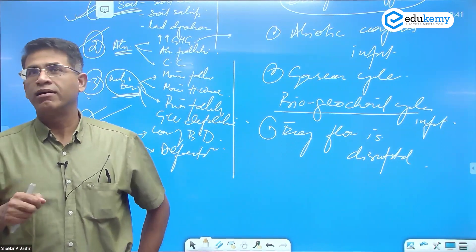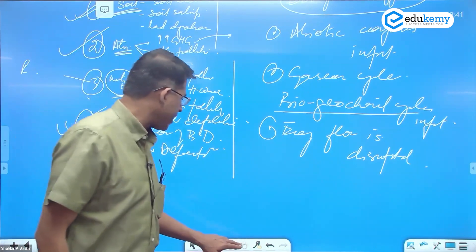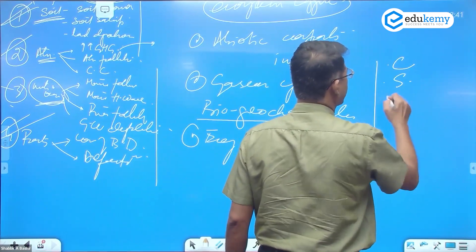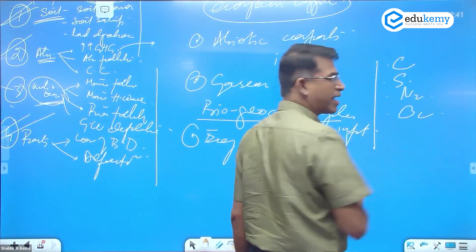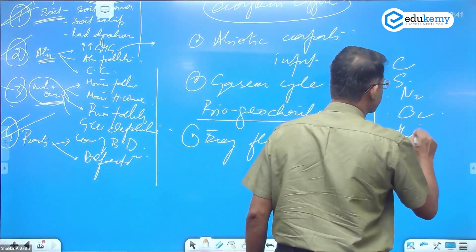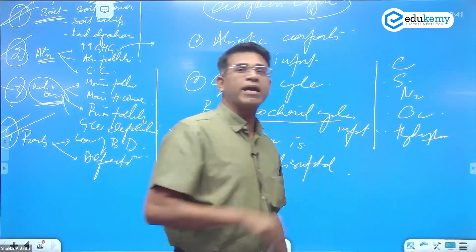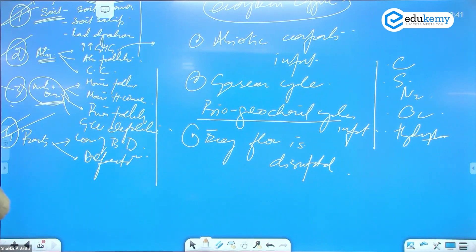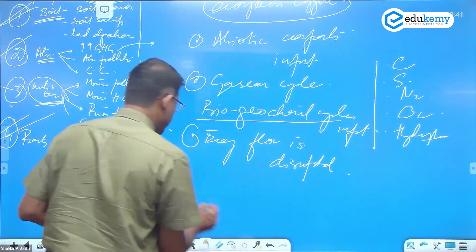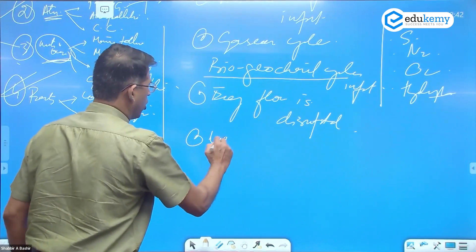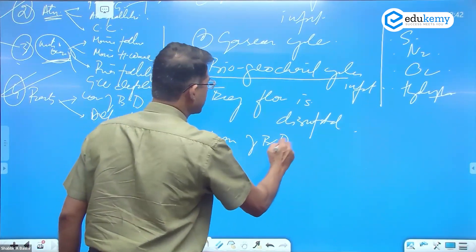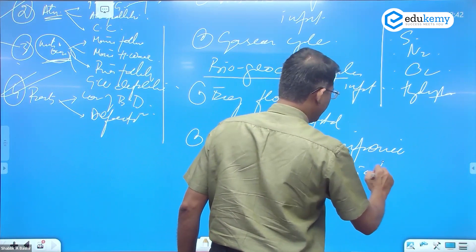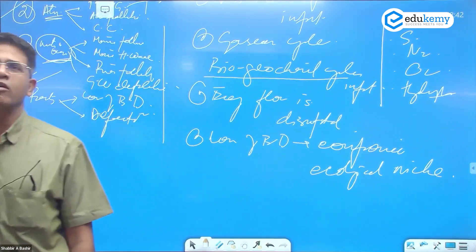There is a carbon cycle, sulfur cycle, nitrogen cycle, oxygen cycle. We also have hydrological cycles - these get impacted. The energy flow gets disrupted. Loss of biodiversity compromises ecological niche.